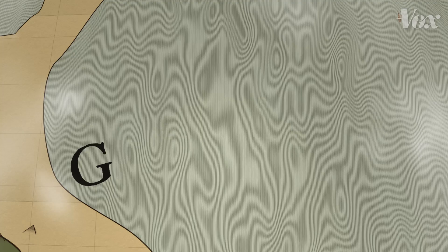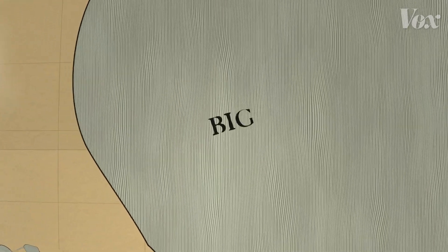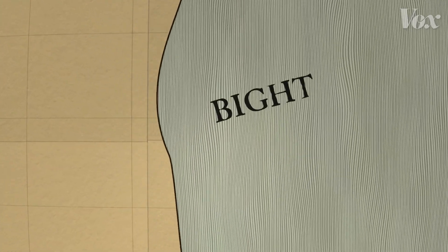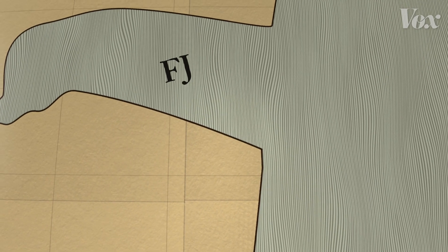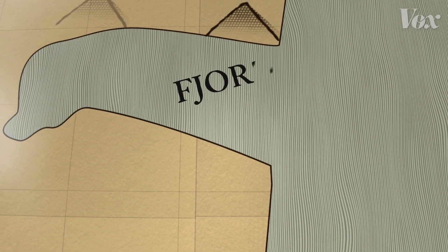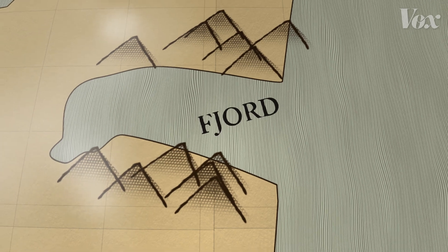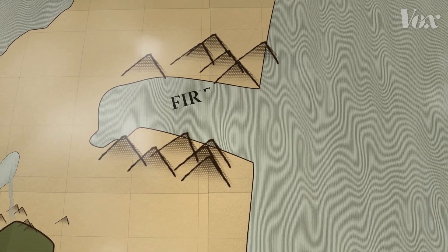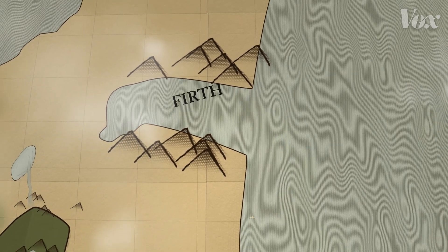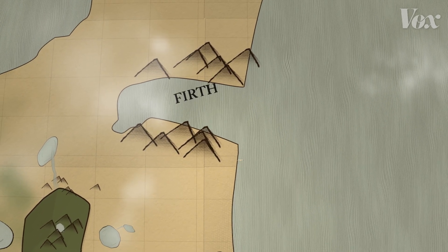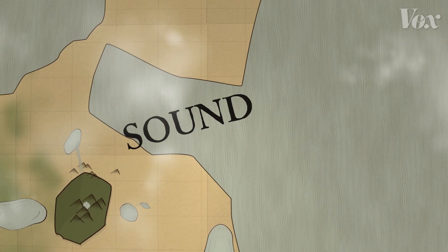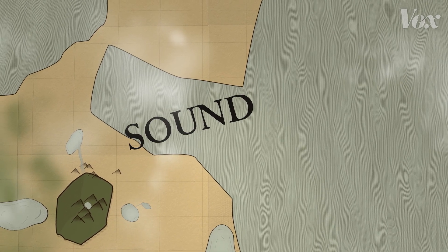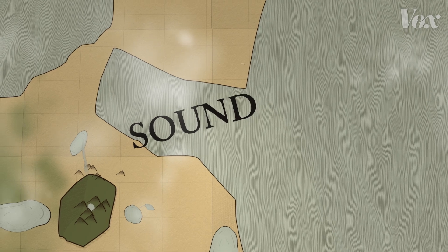Make a bay bigger and it's a gulf, while a bight is a slighter and smaller indentation. A fjord is like a bay with a steep entrance, often consisting of mountains. In Scotland and England you might hear about a firth — it's like a fjord, but it can be a broader term for bays as well. A sound is like a large bay, but often longer and between two sections of land.